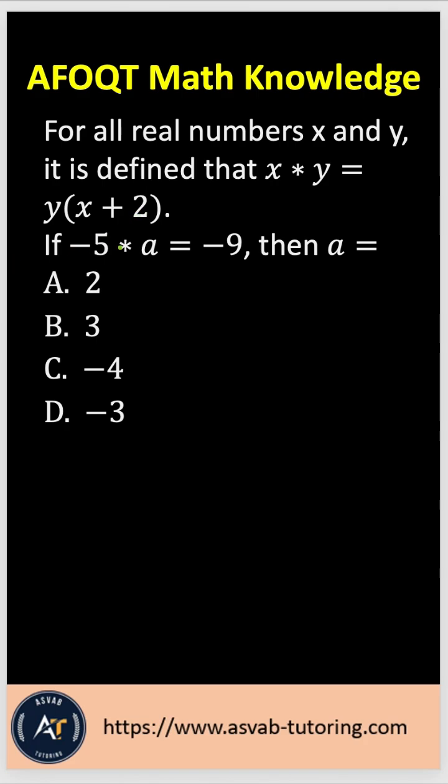If negative 5 asterisk a equals negative 9, then what is a? You have to find a.